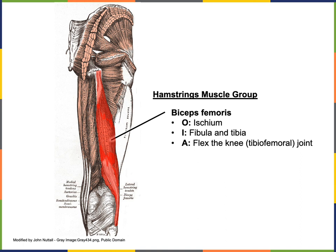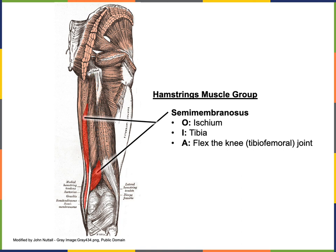Semitendinosus has an origin from the ischium and an insertion on the tibia, enabling flexion at the knee. Deep under semitendinosus is semimembranosus — both muscles are visible in this view. Semimembranosus similarly has its origin on the ischium and its insertion on the tibia, also enabling the action of flexion at the knee joint.